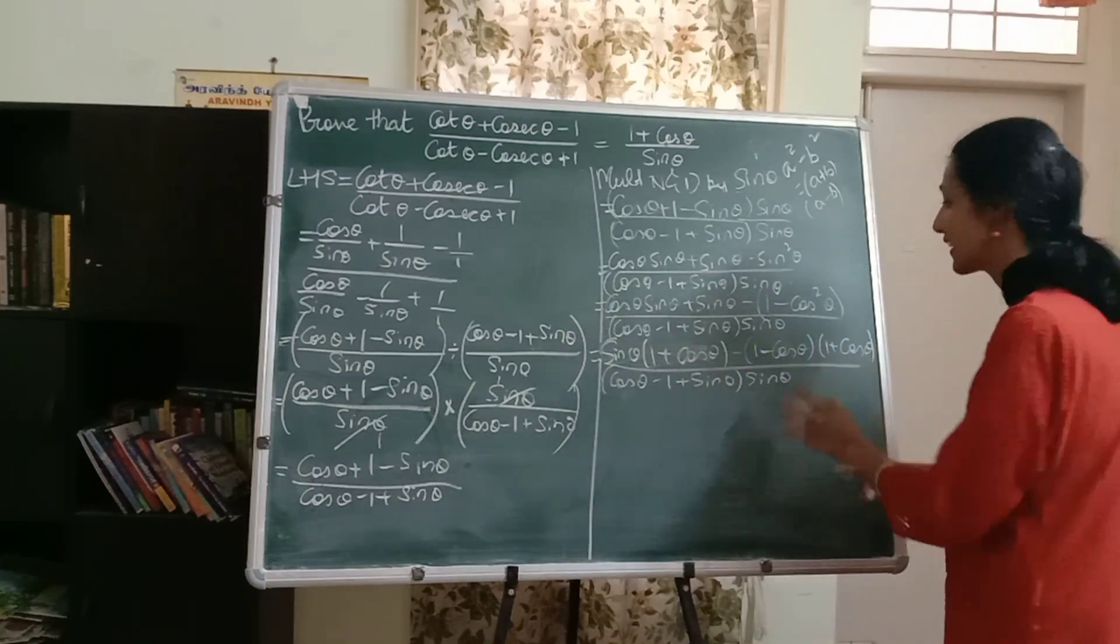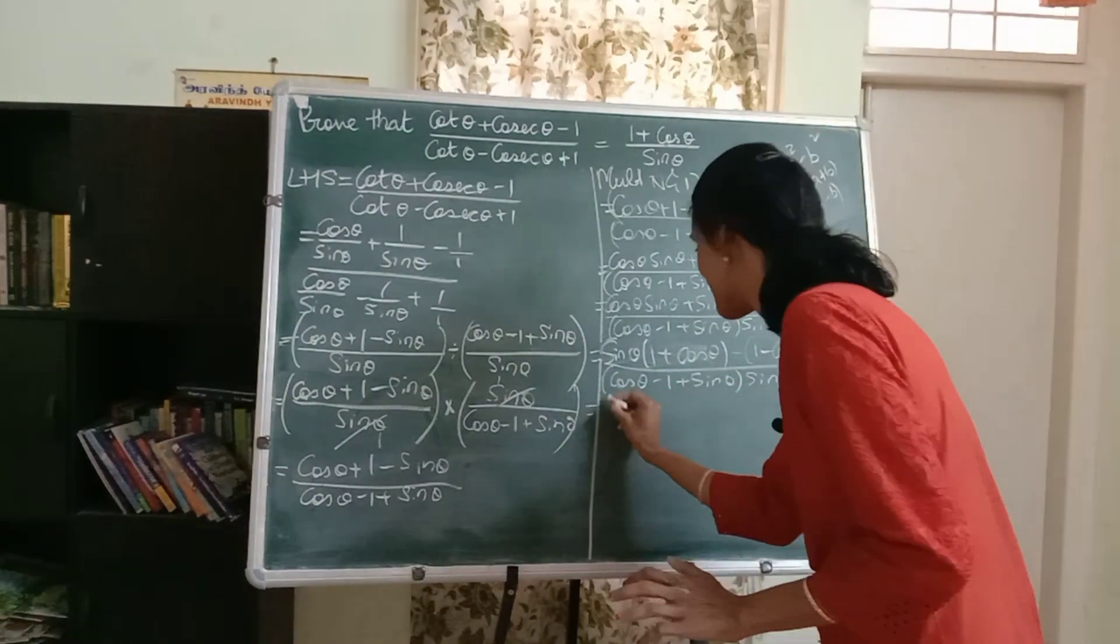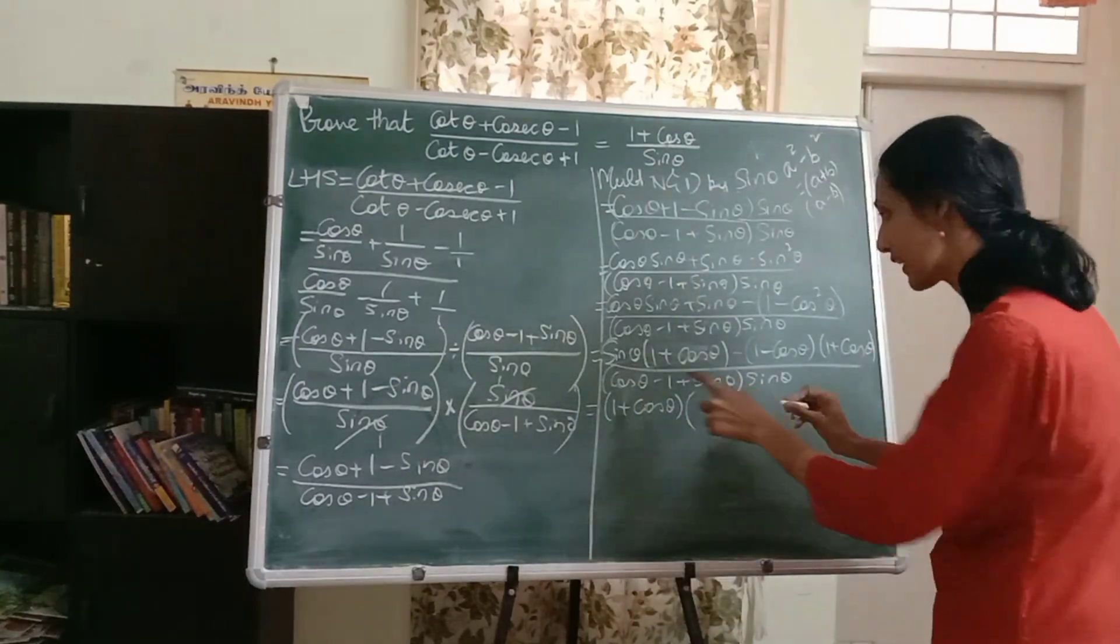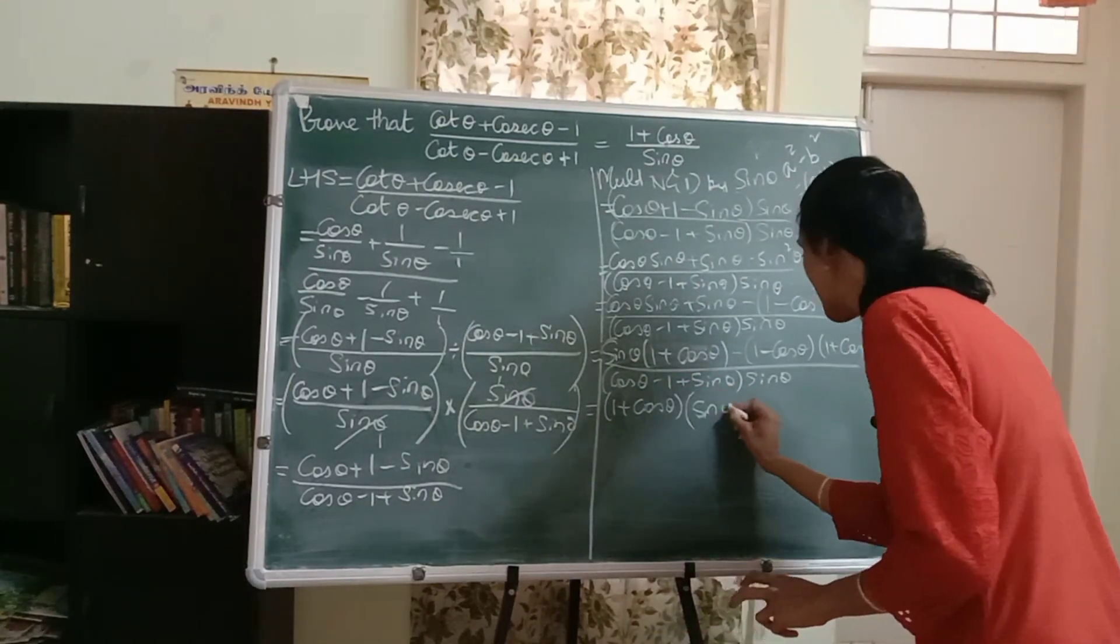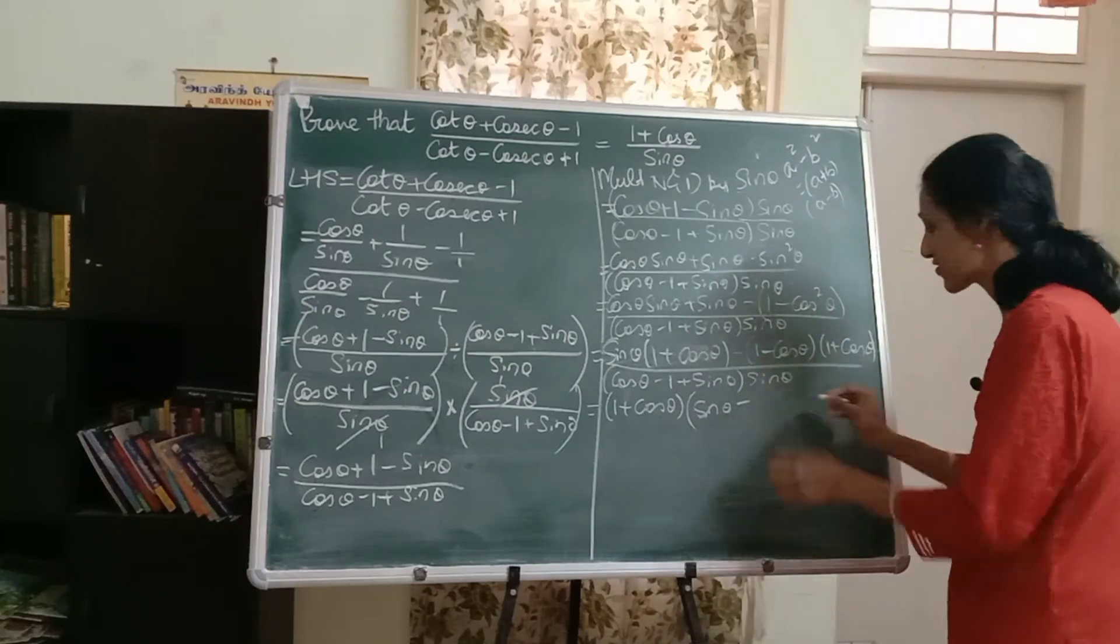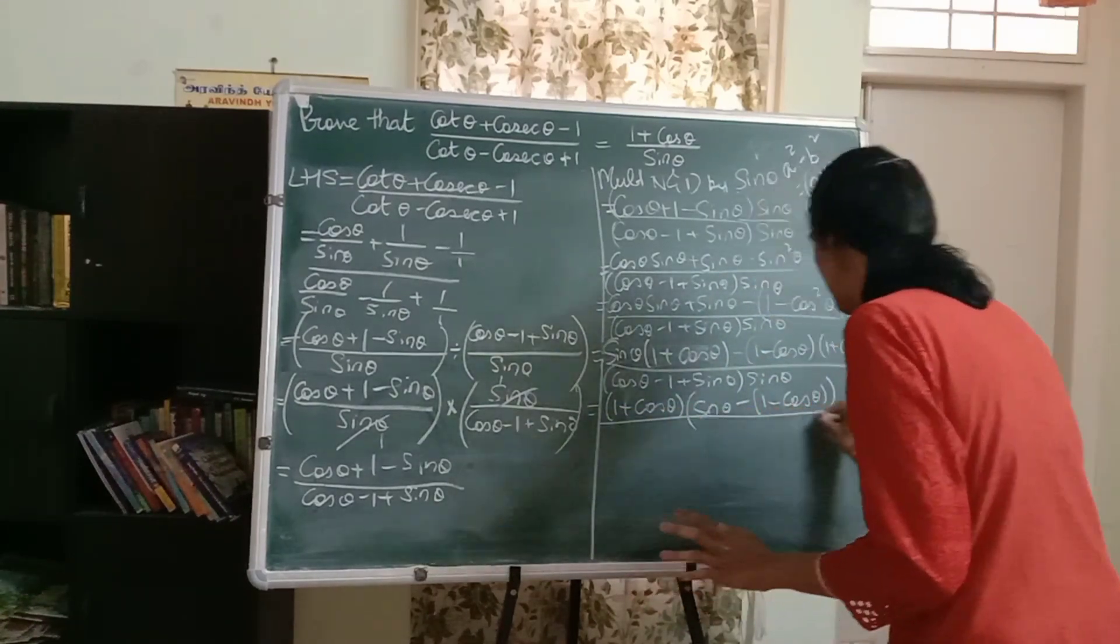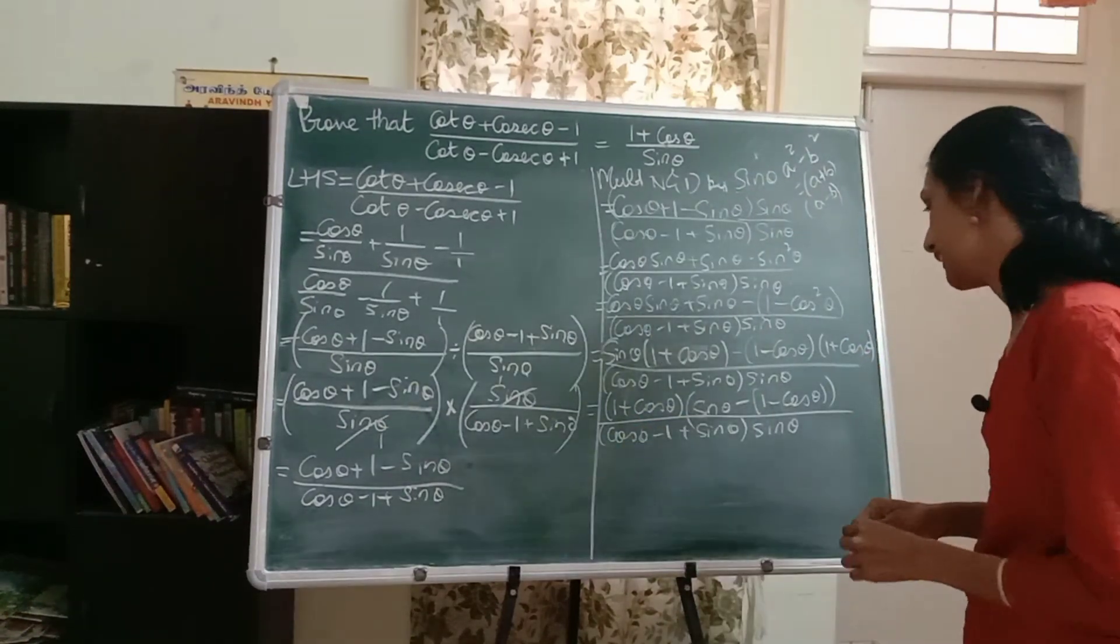Did you see one plus cos theta is common in both the terms? That's great. I'm going to take it common right away. And what is remaining is sine theta minus this part is remaining. I'll keep it in bracket for the time being. And the denominator, again, I have to write it as it is.